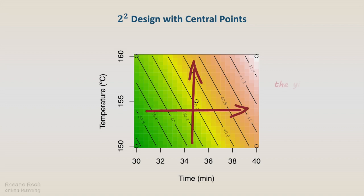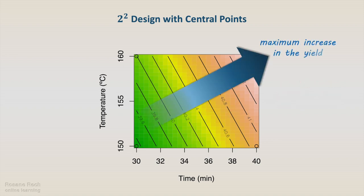In this plot we can see that the yield increases with both temperature and time. However, the yield seems to be far from the optimum. We don't see a region of maximum yield. However, we can see the path of the maximum increase in the yield. This path of the maximum increase in the response is called the direction of the steepest ascent.